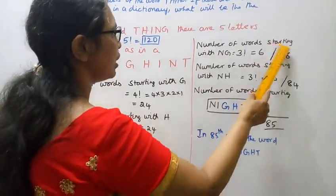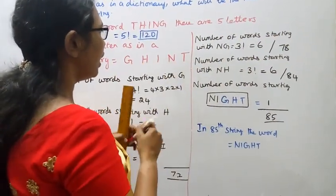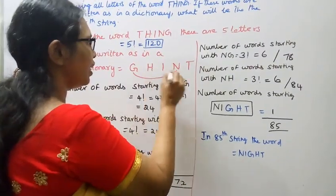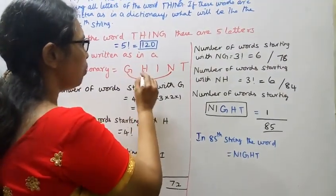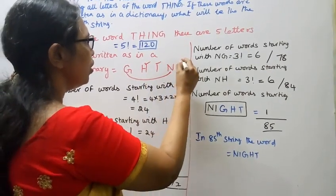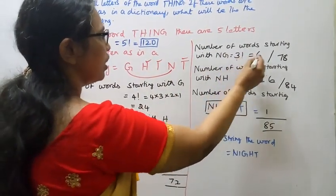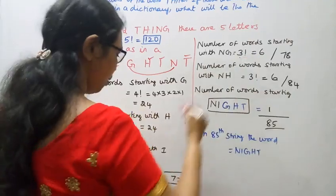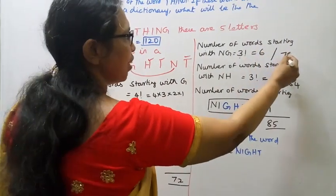Number of words starting with N followed by G: the remaining 3 letters give 3 factorial equals 6. So 72 plus 6 equals 78. 78 strings covered.